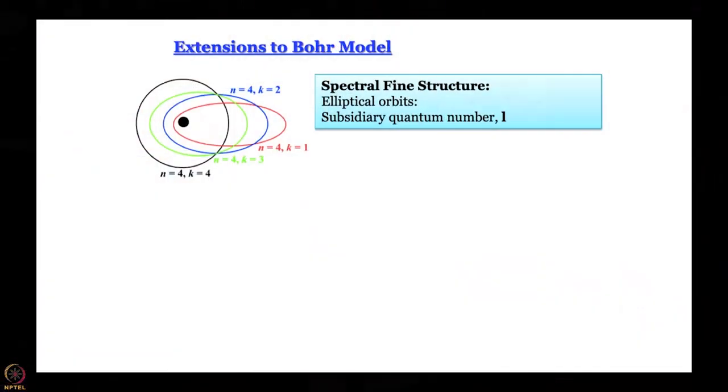The first extension was necessitated by the fact that with the advent of better spectrometers, it was found that what was thought to be one line in a particular atomic spectrum was not one line — sometimes it was two lines, sometimes three. So it appeared that there are sub-levels of energy. To account for this spectral fine structure, Sommerfeld invoked the concept of elliptical orbits. For every value of n, you have a series of elliptical orbits, a special case of which is a circular orbit.